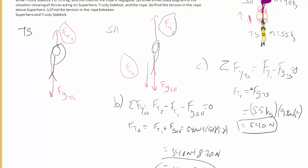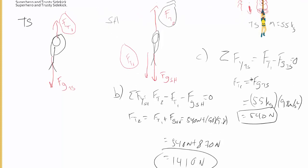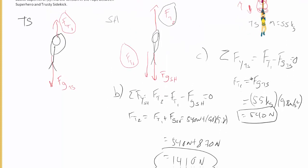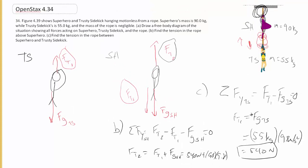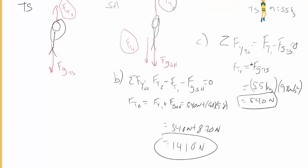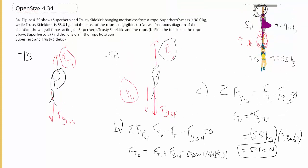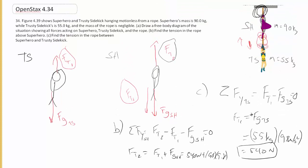And that's the tension in the top rope. So you see the tension in the top rope is more than the tension in the rope between the two of them. And that makes sense because the top rope has to hold both of them, where the one in between them is just holding one of them.